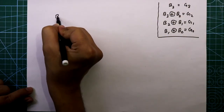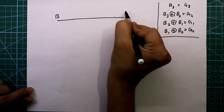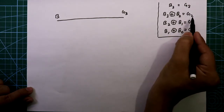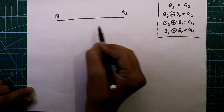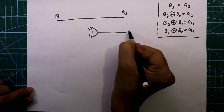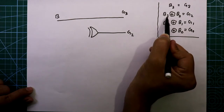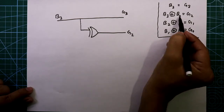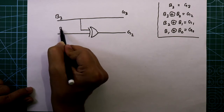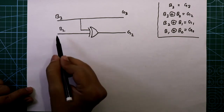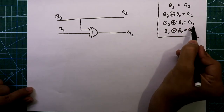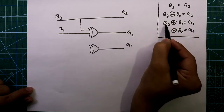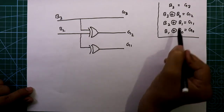From the first equation, B3 equals G3. For G2 we need an XOR gate — G2 = B3 XOR B2, so connect B3 and B2 to the XOR gate inputs and G2 is the output. For G1 we need another XOR gate — G1 = B2 XOR B1, so connect B2 and B1 to the inputs.